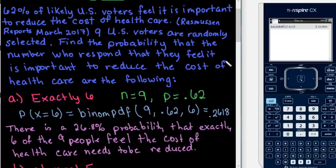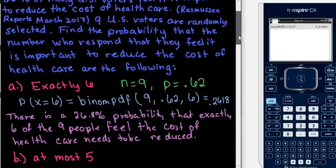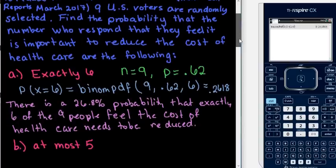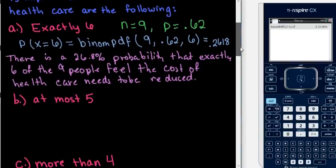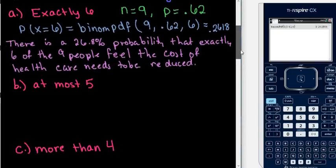For the rest of these we are going to be using binomial CDF. This calculator is very different from what you would do on the TI-84. Most calculators, when finding a cumulative probability, are programmed to start at 0 and add until you tell them to stop. On the TI Inspire you can actually specify both an upper and a lower limit.